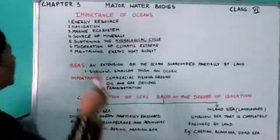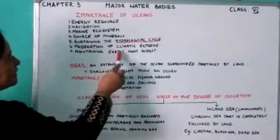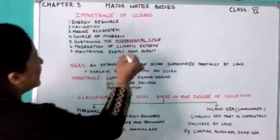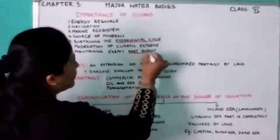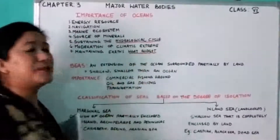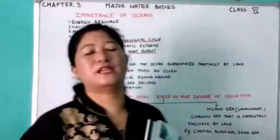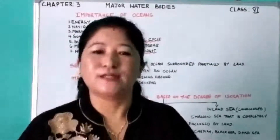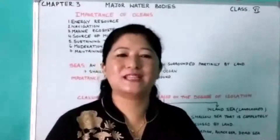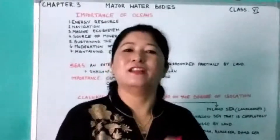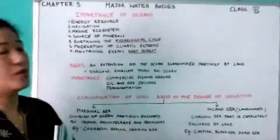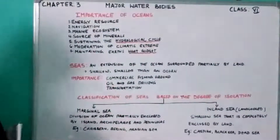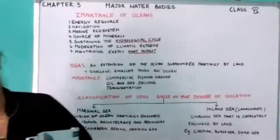Number seven: maintaining the Earth's heat balance. This is the balance between the incoming solar radiation and the outgoing terrestrial radiation, and this balance is maintained by the oceans. So these are the seven importances of oceans.